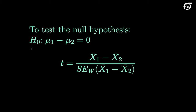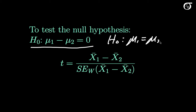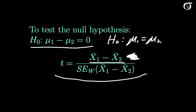If we want to test the null hypothesis that mu1 minus mu2 equals 0, this is equivalent to testing whether mu1 equals mu2. The test statistic is our best guess of mu1 minus mu2 — that is, x-bar1 minus x-bar2 — minus the hypothesized value of 0, divided by the Welch standard error. The degrees of freedom for this t statistic use the same complicated formula.